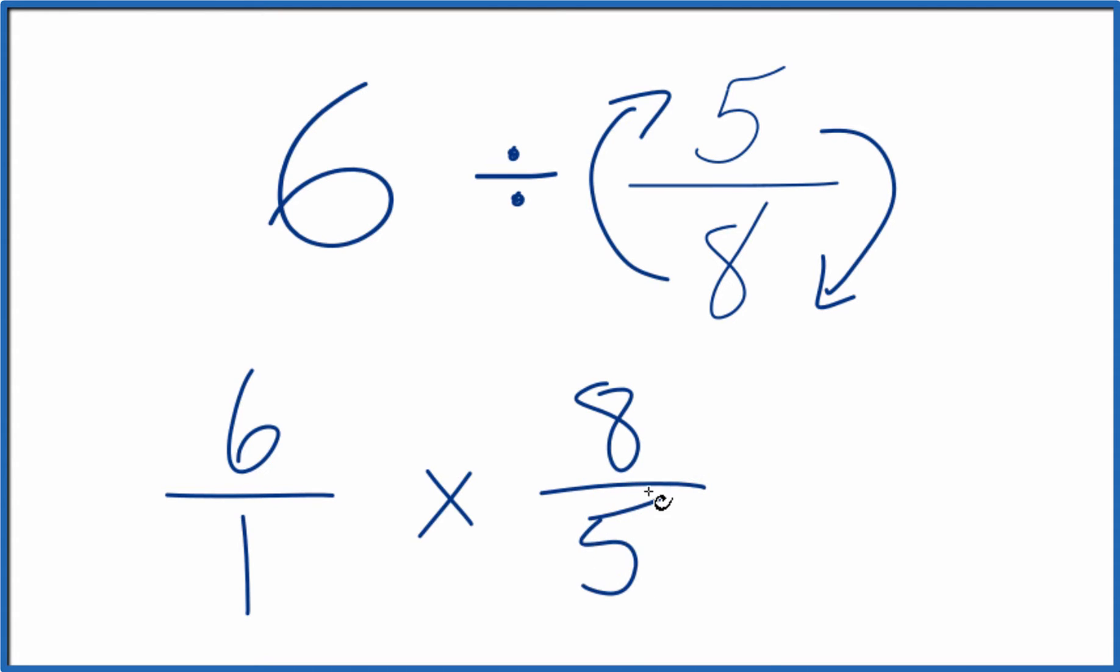And now when we multiply fractions, we just multiply the numerators and then the denominators. 6 times 8 is 48. 1 times 5 is 5. And we end up with 48 fifths.